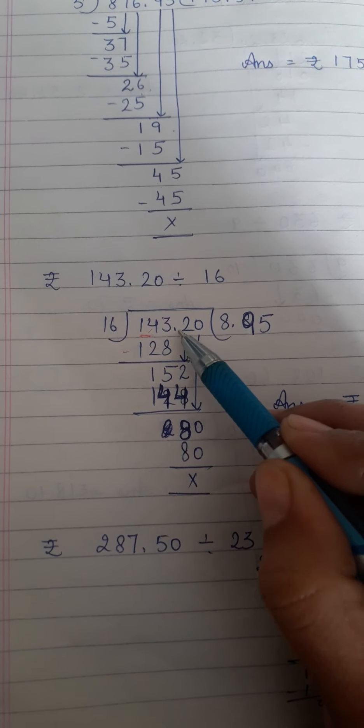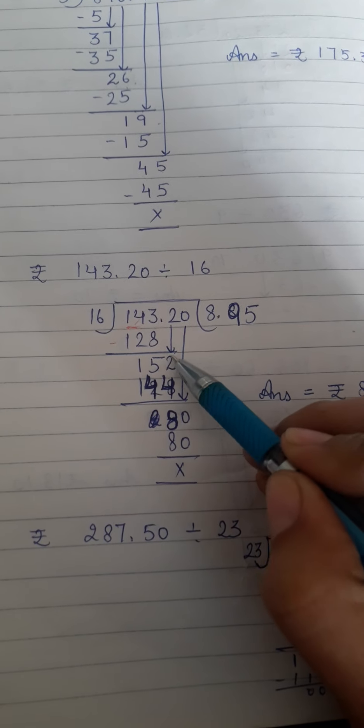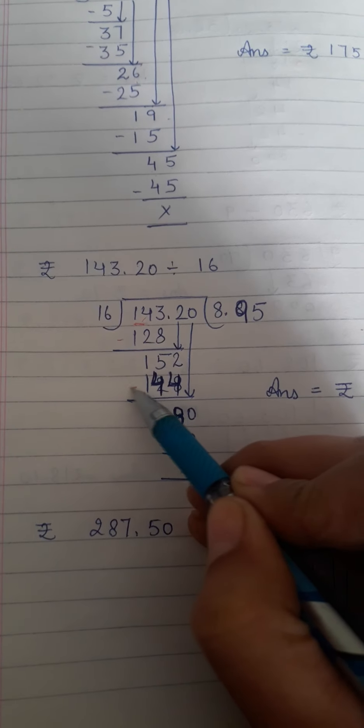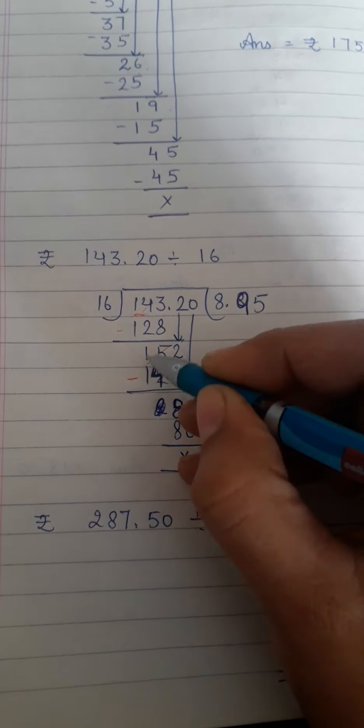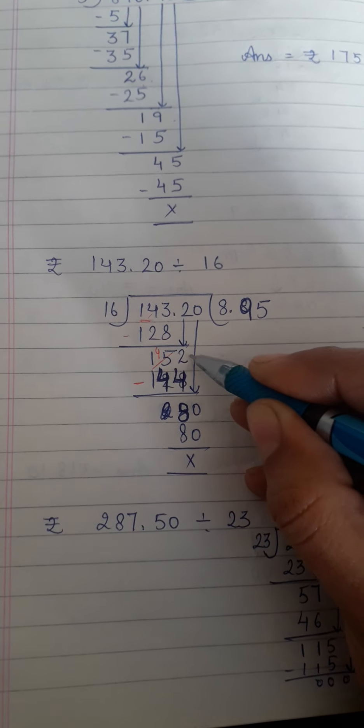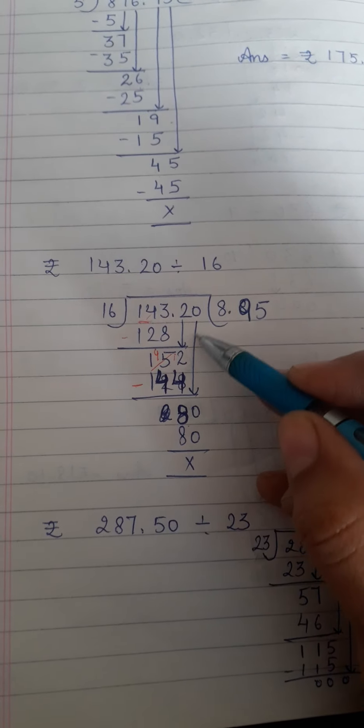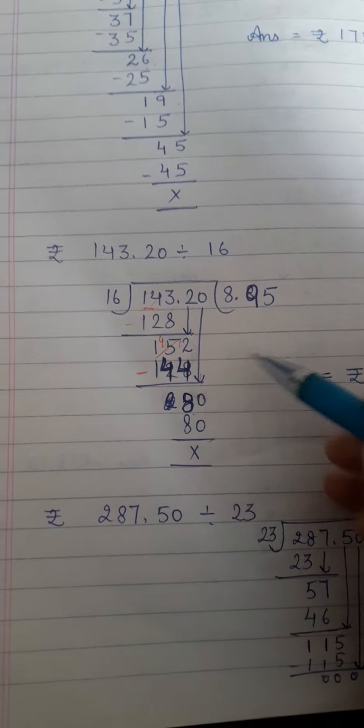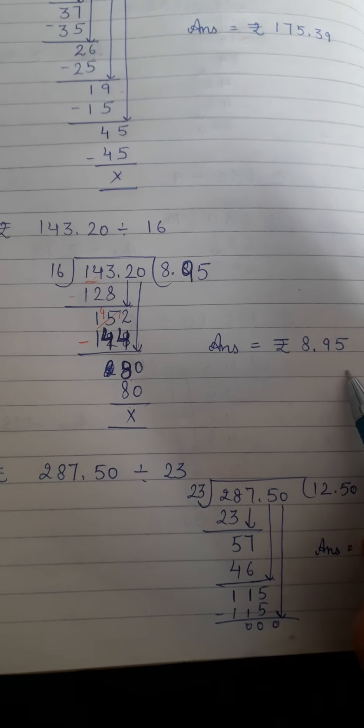Now bring down digit from top. So here decimal comes. So first put decimal in the question. Then bring down 2 from top. Now 16 nines are 144 will go. Then minus this again. 2 minus 4 cannot be done. Take carry from here. This becomes 4, this becomes 12. 12 minus 4 is 8. 4 minus 4 is 0. Bring down next digit 0 from top. 16 fives are 80. So your answer is rupees 8 and 95 paisa.